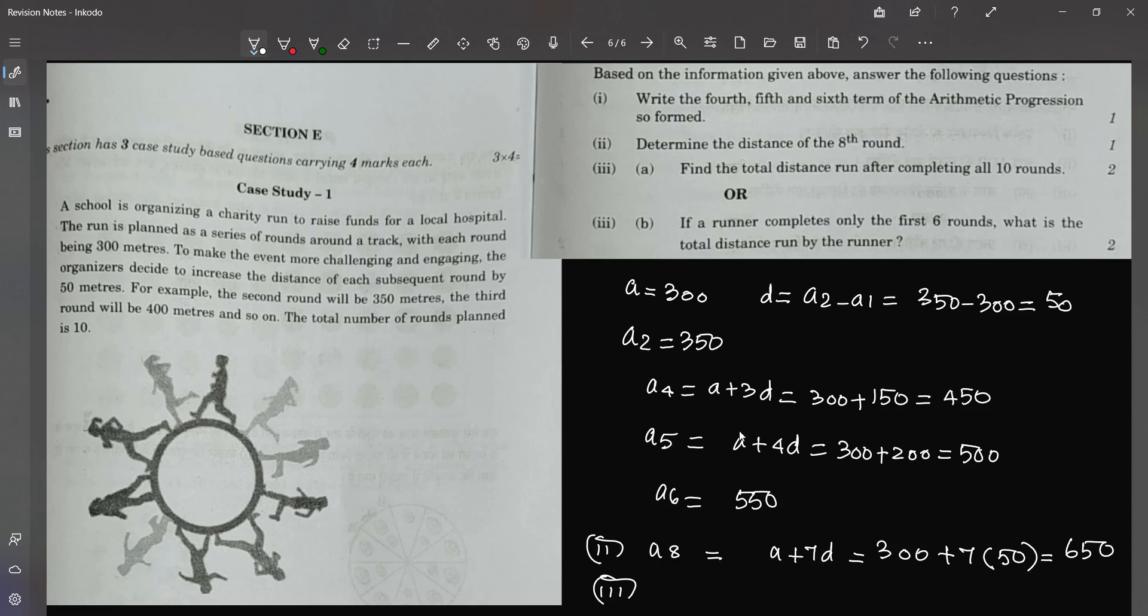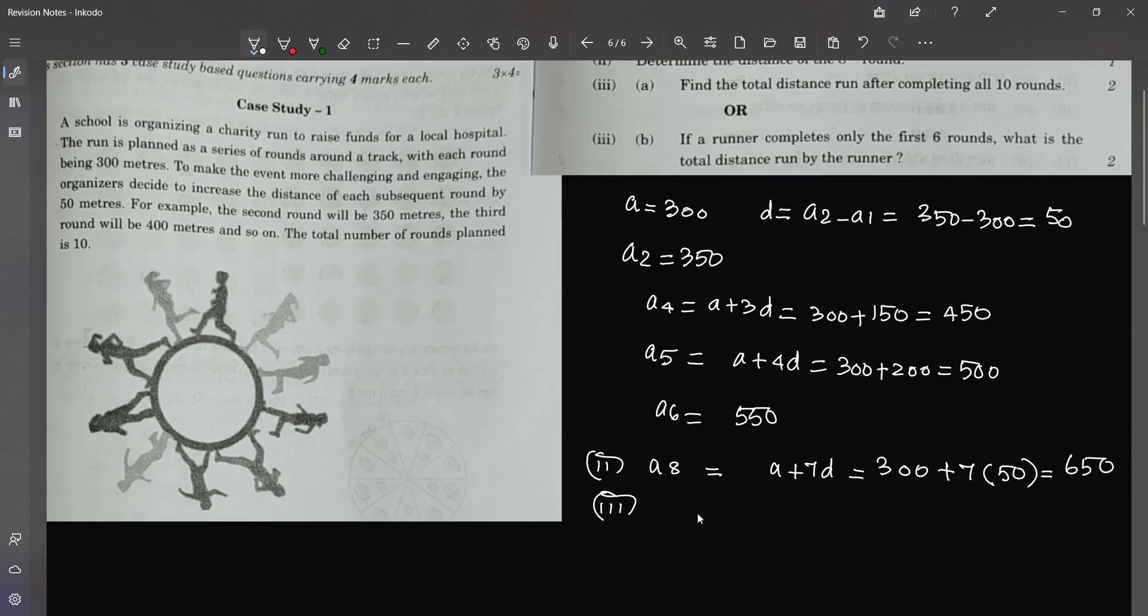For the third subdivision, find the total distance run after completing all 10 rounds. So we need to find s10 which is equal to 10 divided by 2. We know the formula, right? So sn is equal to n by 2 times 2a plus n minus 1 into d.